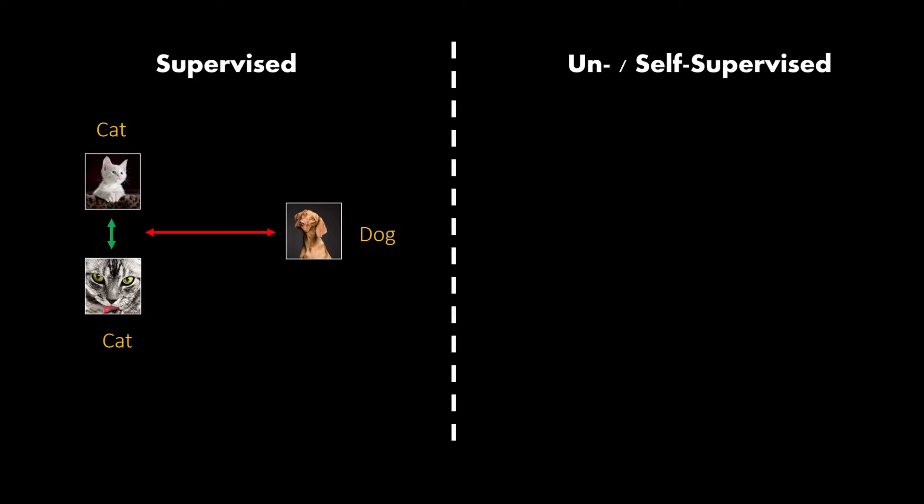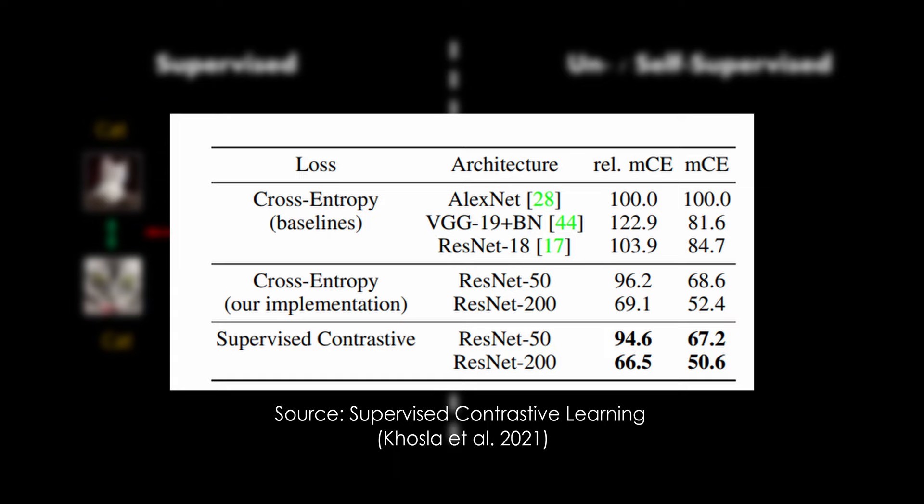In the supervised case, that's straightforward. We can simply use the labels to pick out data points that belong to the same class and those who don't. Research has shown that supervised contrastive learning can produce representations that are able to outperform classical loss functions like cross entropy. It has also shown to be more robust.